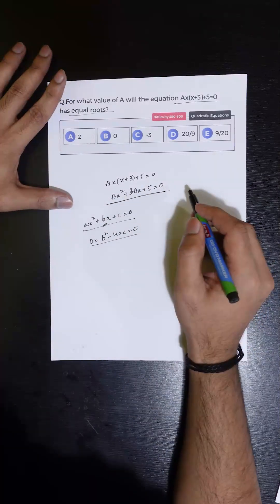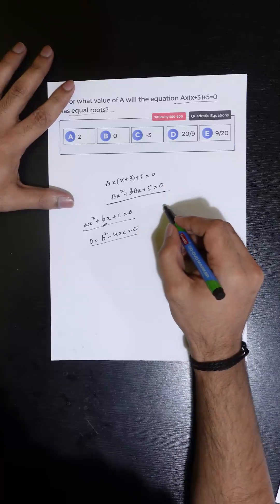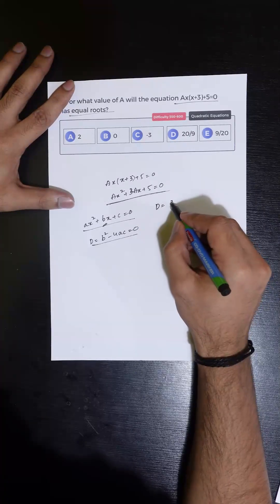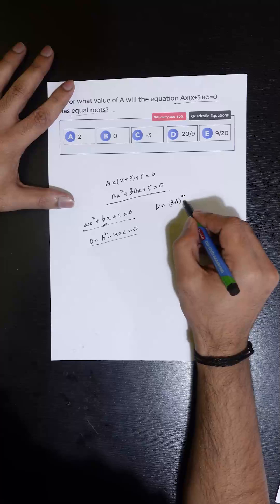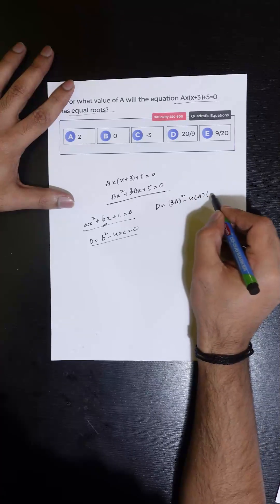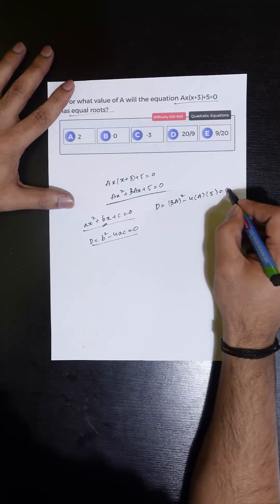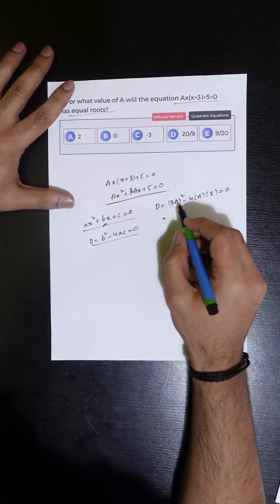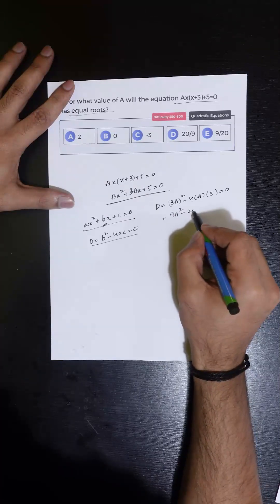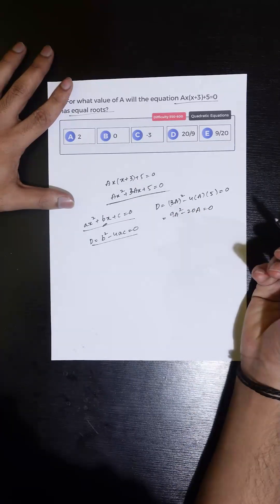So for this equation to have equal roots, the value of D has to be equal to 0, which is B square minus 4A into C, which is 5, has to be equal to 0. So this is nothing but 9A square minus 20A is equal to 0.